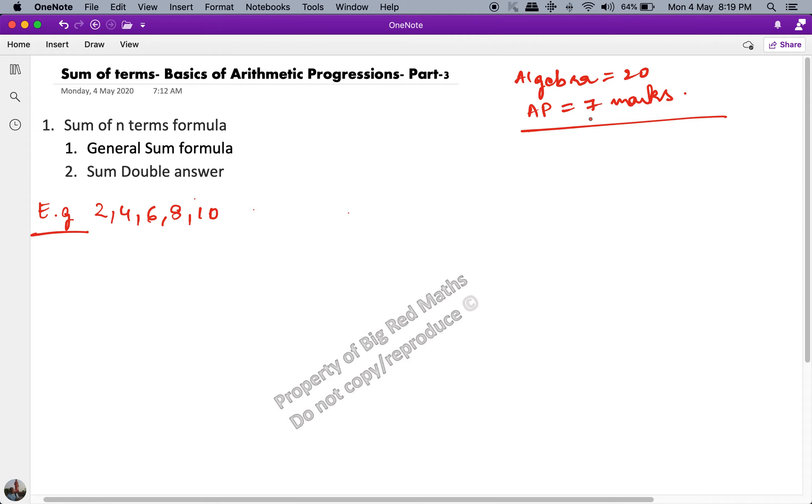This is the second formula in this chapter for class 10th. The sum of the first n terms of a series is denoted by Sn equals n by 2 multiplied by 2a plus n minus 1 into d. This is the formula.